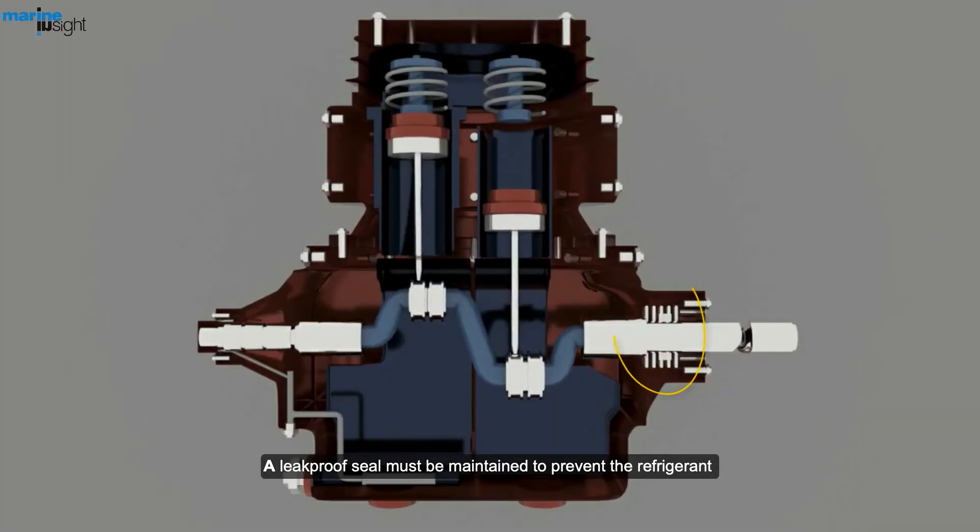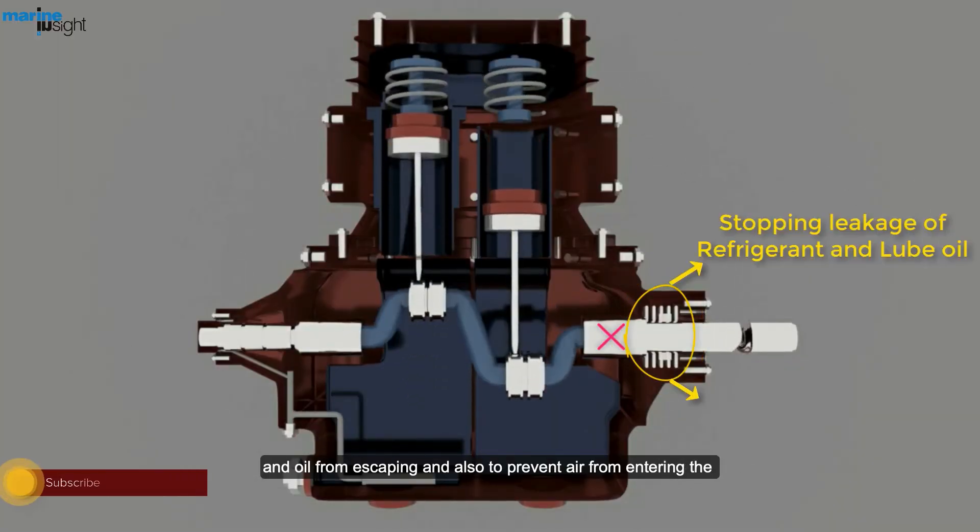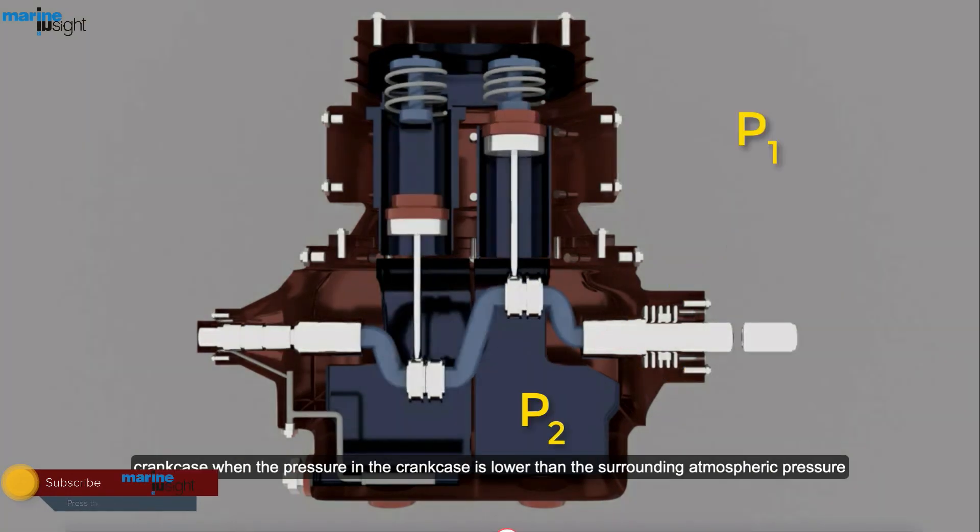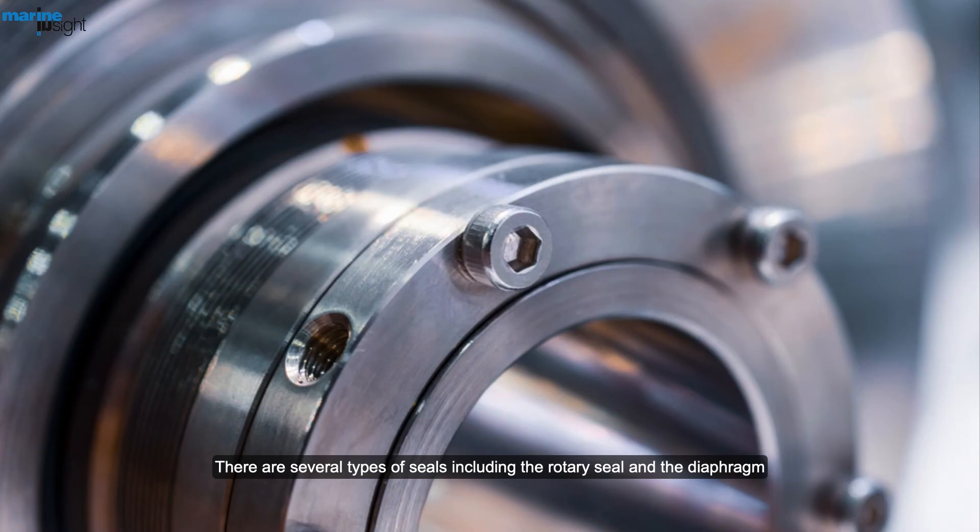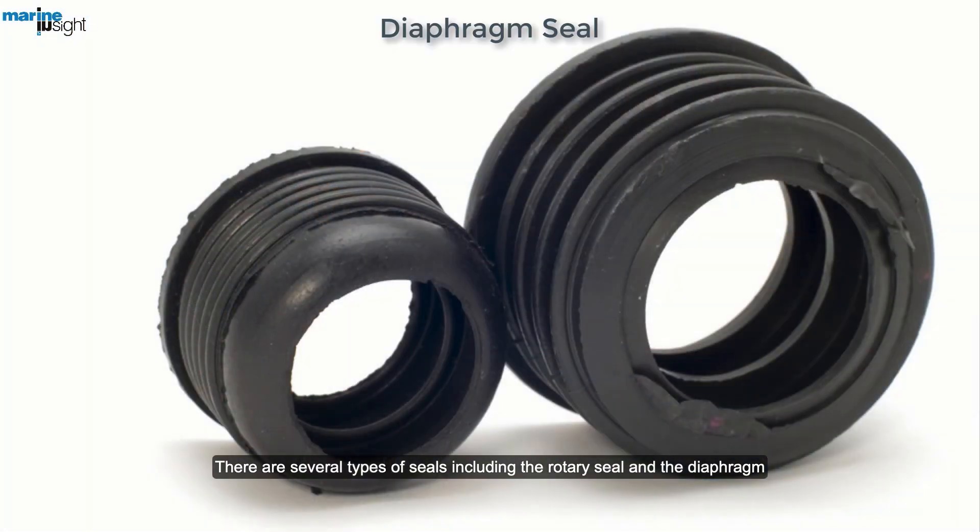A leak-proof seal must be maintained to prevent the refrigerant and oil from escaping and also to prevent air from entering the crankcase when the pressure in the crankcase is lower than the surrounding atmospheric pressure. There are several types of seals, including the rotary seal and the diaphragm.